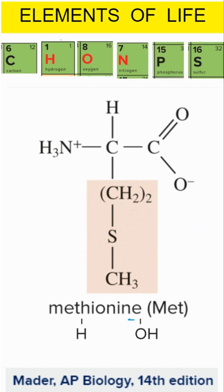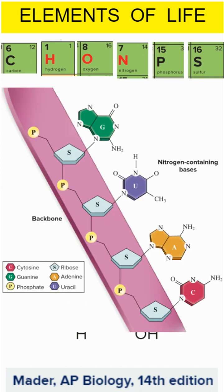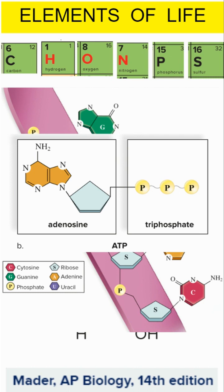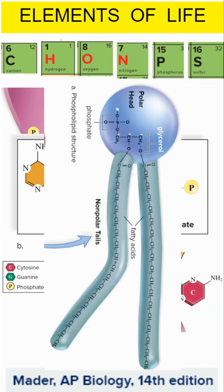Throw a little phosphorus in there, and we are getting to our nucleic acids, which have a sugar and phosphate backbone. We also have ATP, a nucleotide with phosphates, extra phosphates on there.